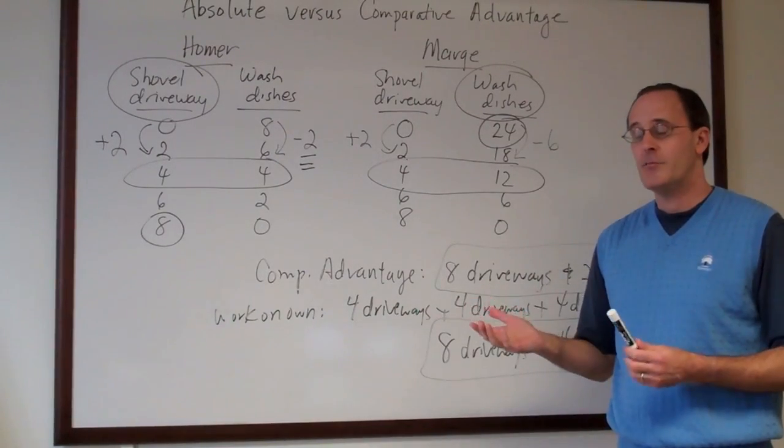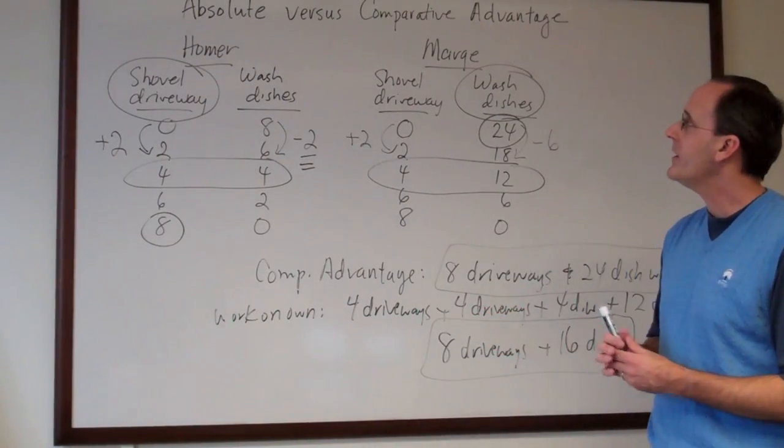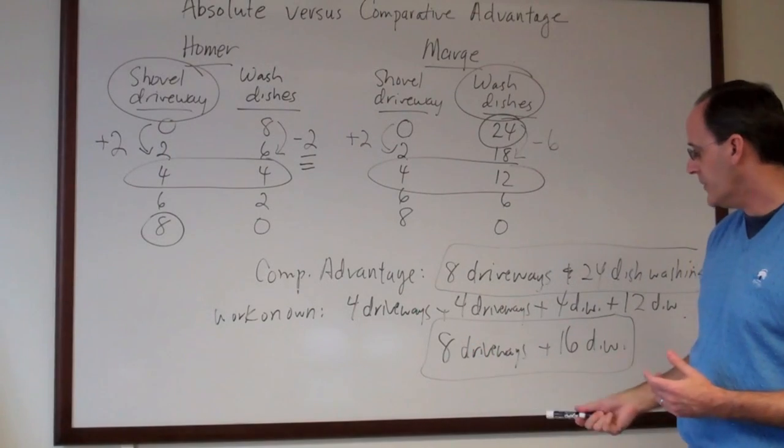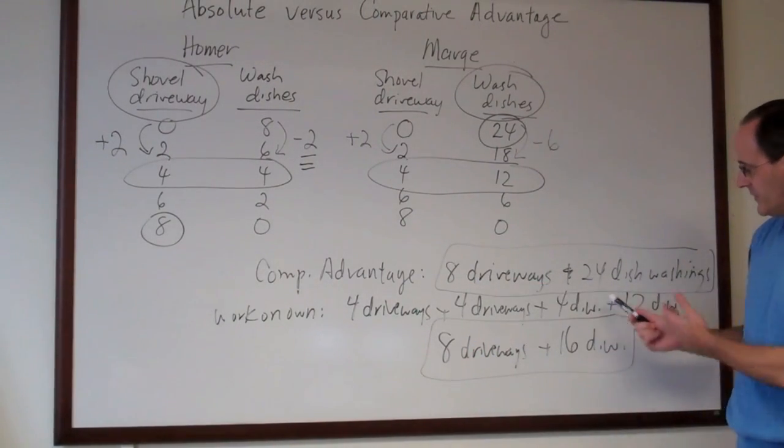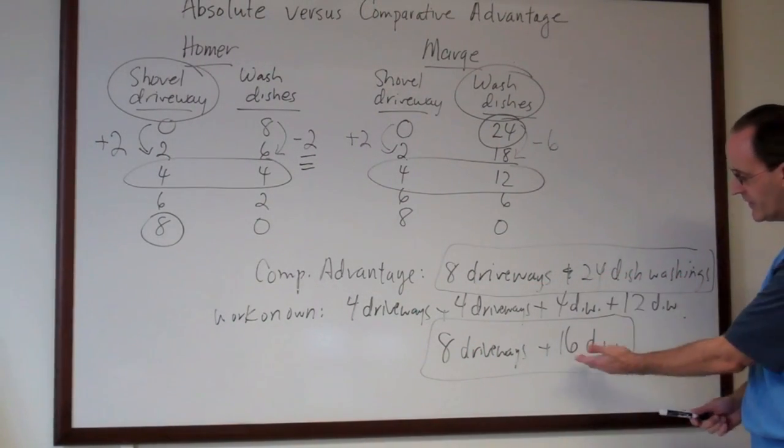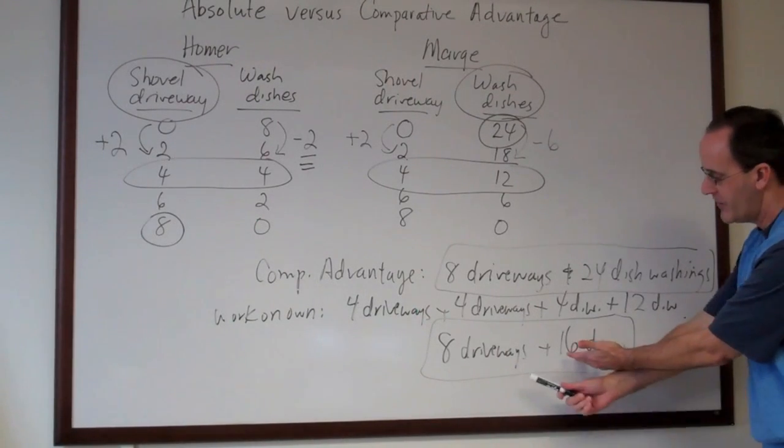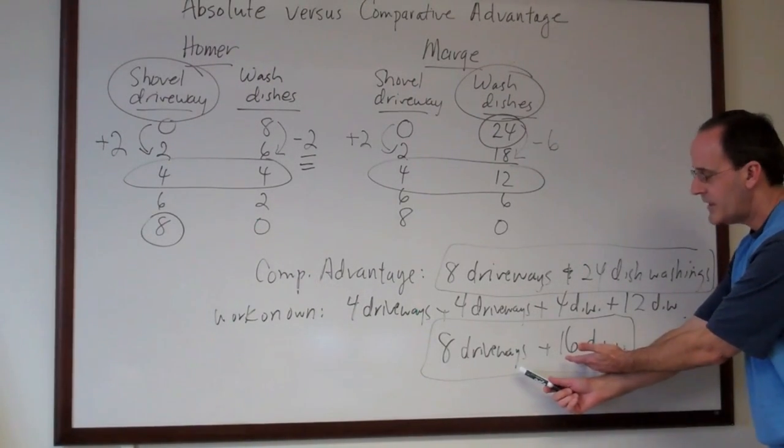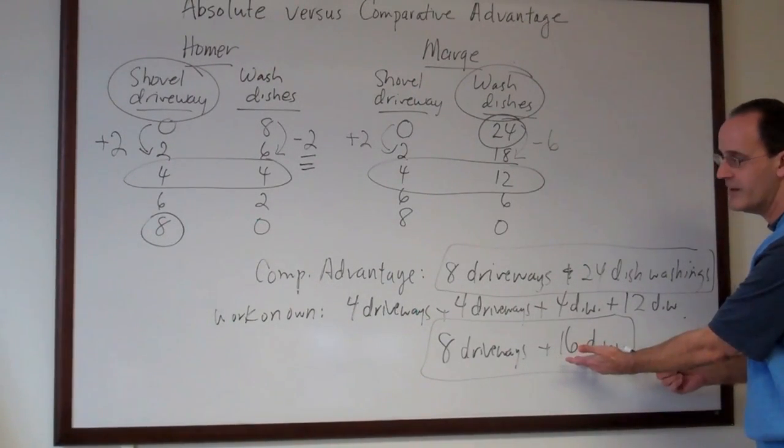So this is the idea that's important to think about now. And this is why comparative advantage can save them both time. Because if they specialize, they'll get eight more dish washings done in the same amount of time as they would have gotten eight and 16 dish washings done working on their own.